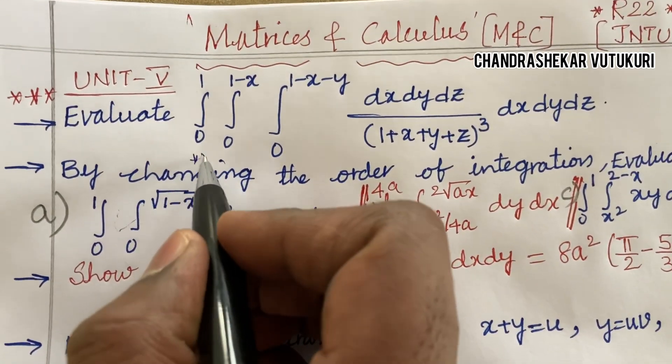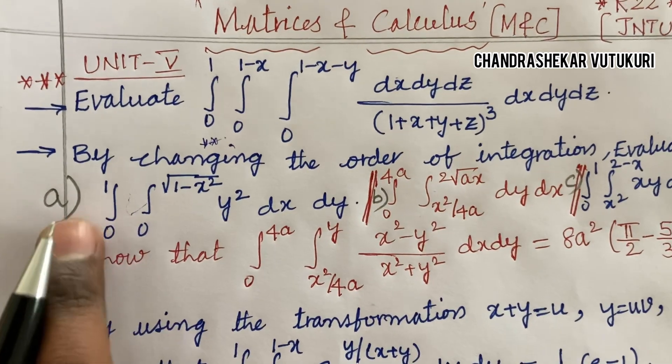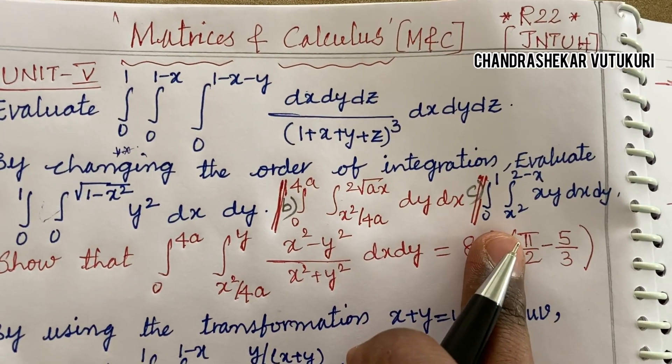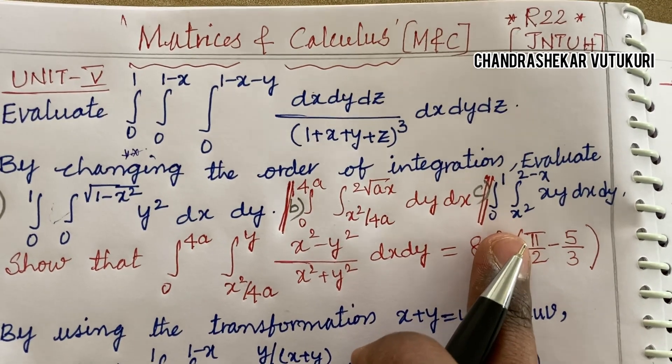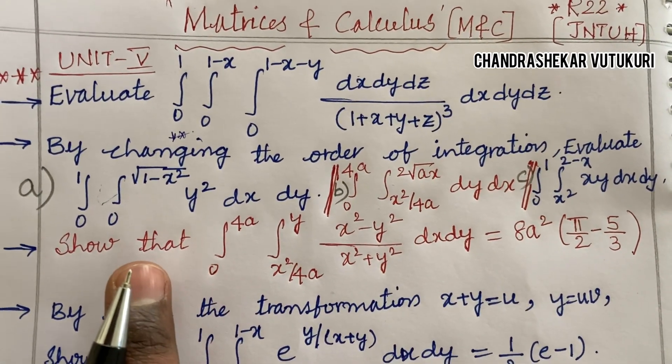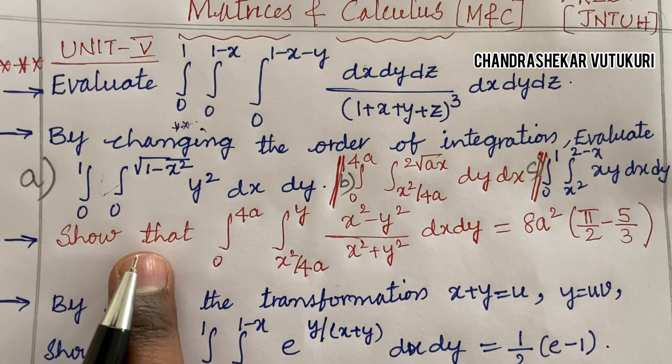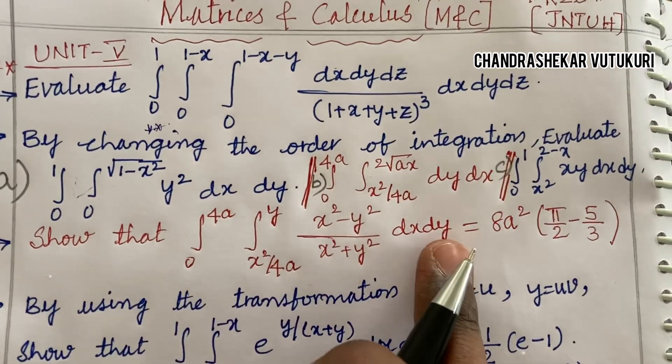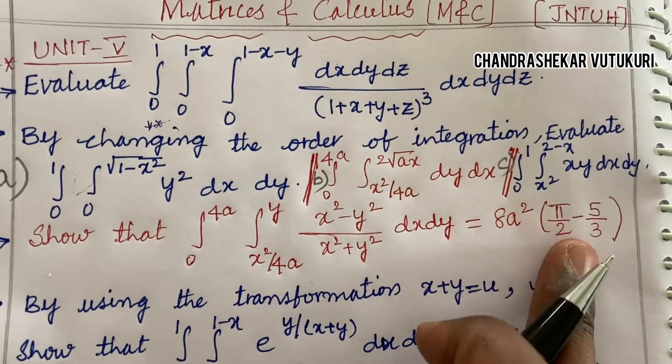By changing the order of integration is a sure question, and certain equations have been stated here. Please take screenshots of all these problems as well as whichever highlighted by your faculty in your college. One more question related to show that certain relation equals to 8a² φ/2 minus φ/2.